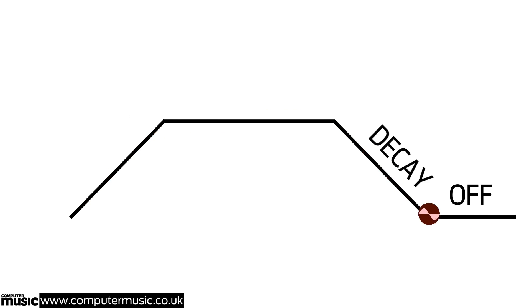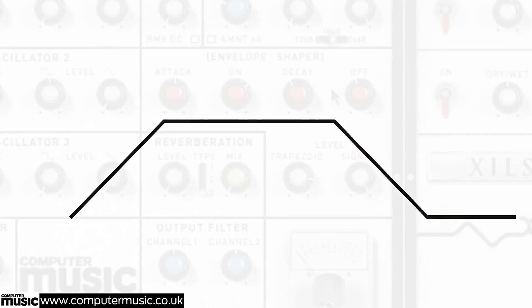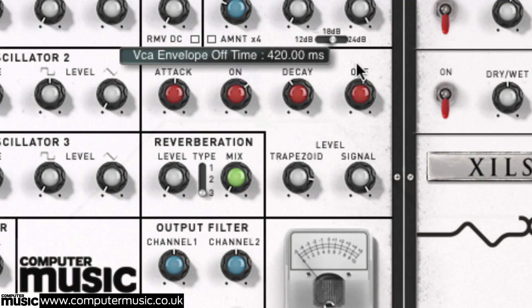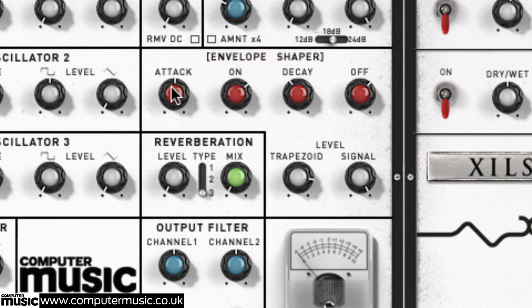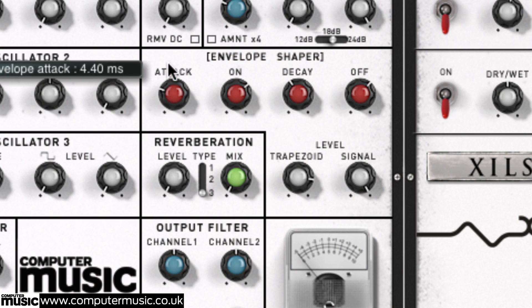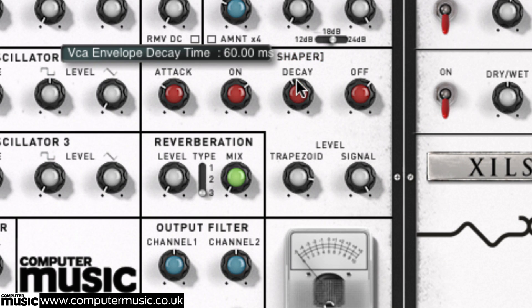A wide range of interesting patterns and rhythms may be created using an envelope generator such as the trapezoid, and this envelope greatly benefits from the fact that its decay stage is available as a modulation target in the pin matrix.